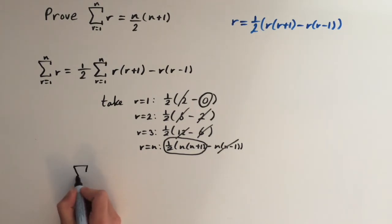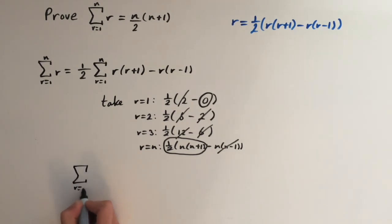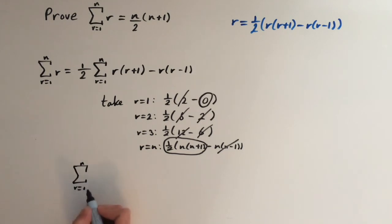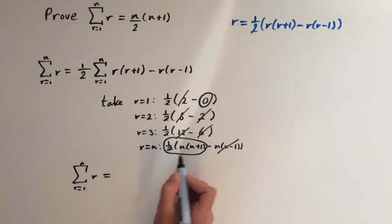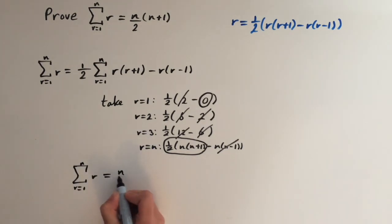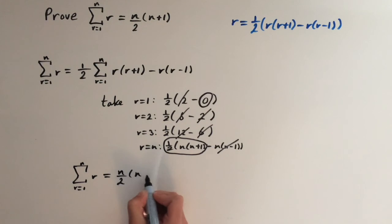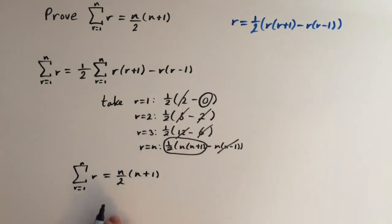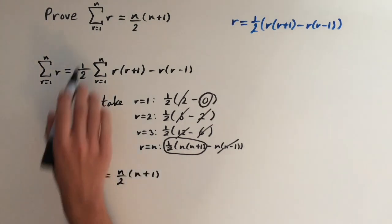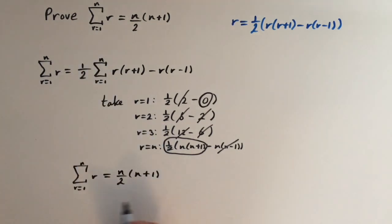So the sum of the series from r equals 1 to n of r equals n over 2 times (n plus 1). There you go — we've proved what we set out to prove.